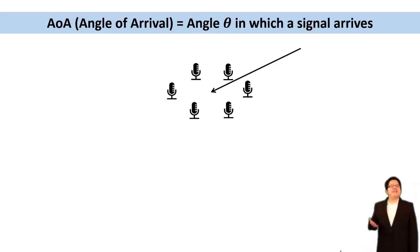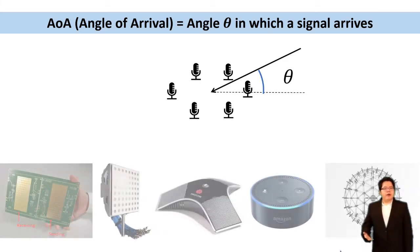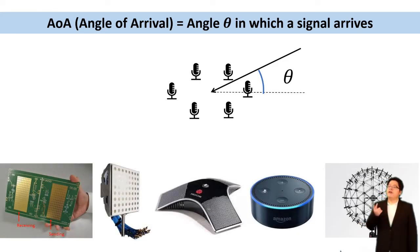Our work focuses on solving the angle of arrival problem. The problem formulation is simple. If we have a microphone array, how can we estimate the angle in which the signal arrives? This technique is widely adapted in various products like smart speakers, conference microphones, directional antennas, etc.